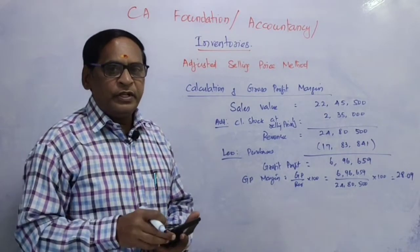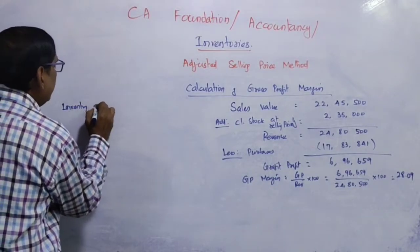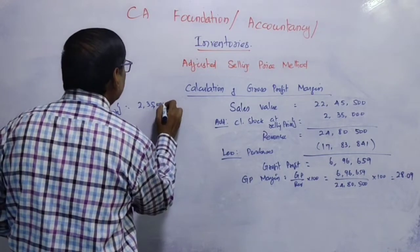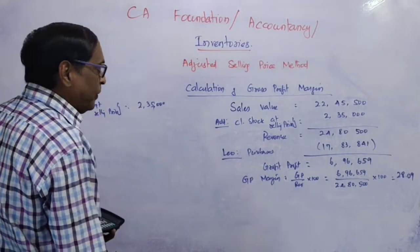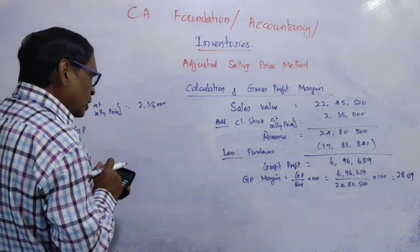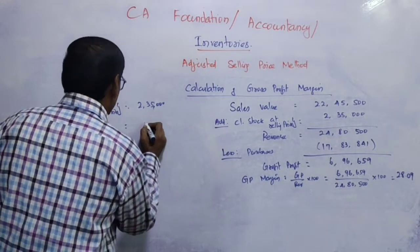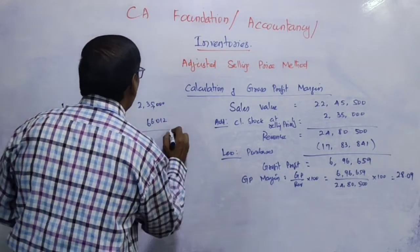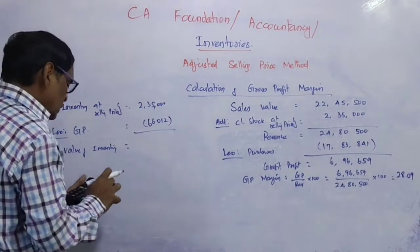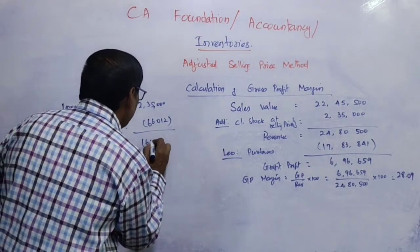So we have to find out the inventory valuation. Inventory at selling price is given as Rs. 2,35,000. The gross profit margin is 28.09%, so we deduct GP: Rs. 2,35,000 into 28.09% equals Rs. 66,012. Deducting GP, the value of inventory is Rs. 2,35,000 minus Rs. 66,012, which equals Rs. 1,68,988.